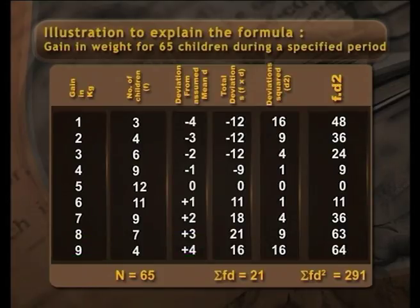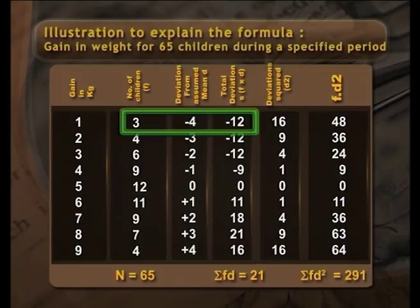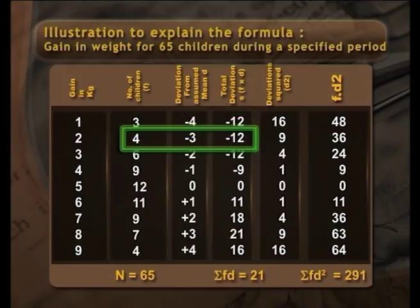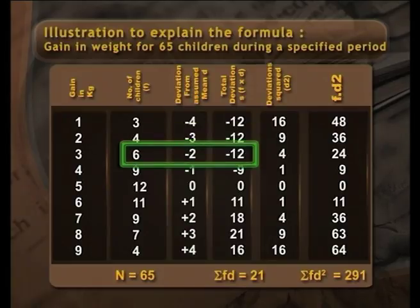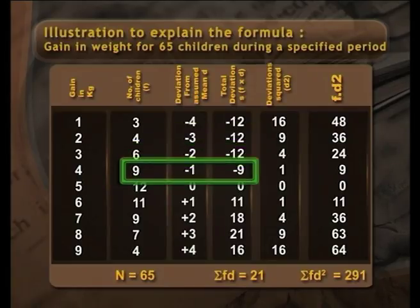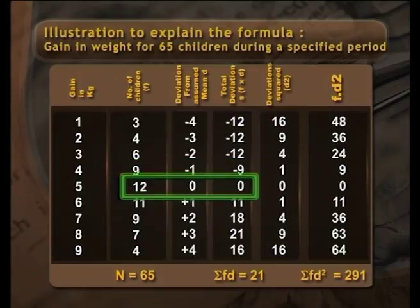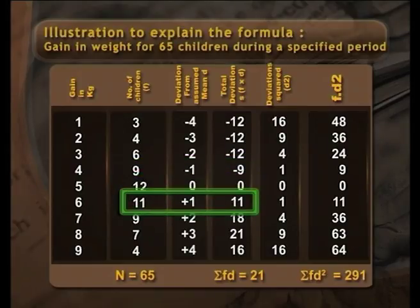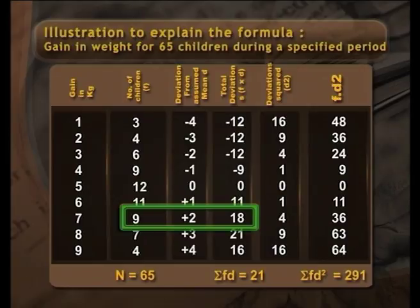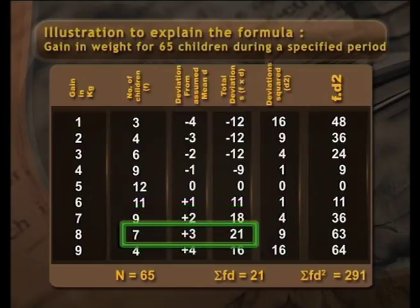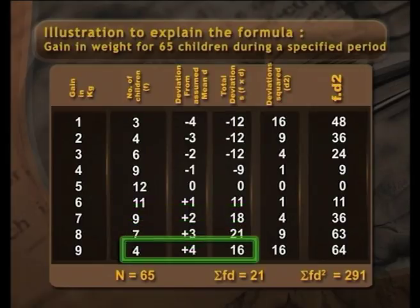We multiply the deviation with the frequency. Minus 4 multiplied by 3 = minus 12. Minus 3 multiplied by 4 = minus 12. 6 into minus 2 = minus 12. 9 into minus 1 = minus 9. 12 into 0 = 0. 11 into 1 = 11. 9 into 2 = 18. 7 into 3 = 21. 4 into 4 = 16.